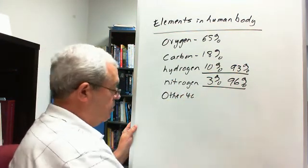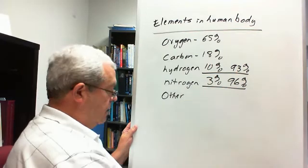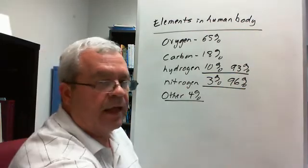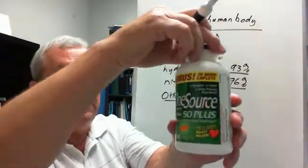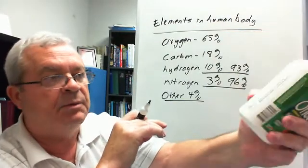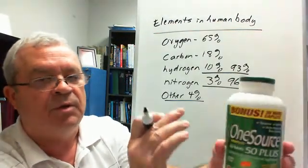What is the other 4%? Well, we can figure that out fairly easy by looking at the label of a bottle, of a vitamin mineral bottle. Now, this is not one most of you want to use, this is for old people, you see, 50 plus.